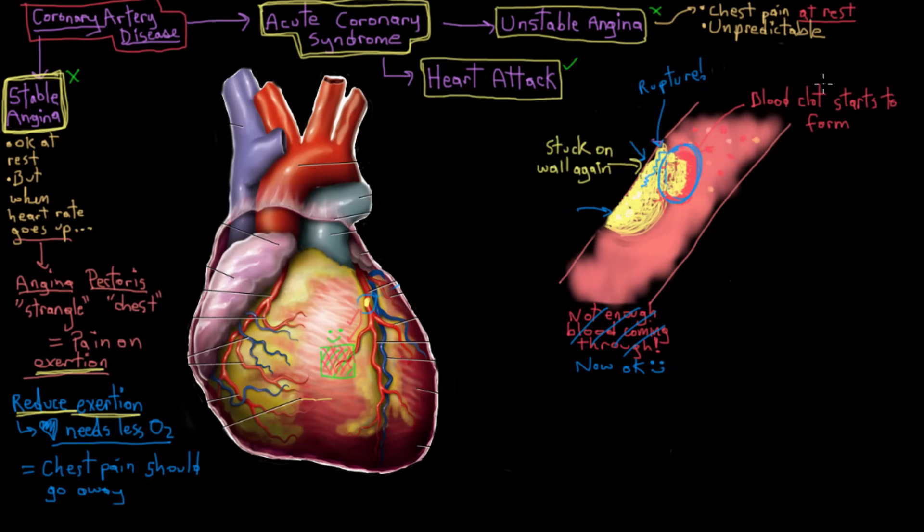Either the clot—also called a thrombus by the way, a clot is also called a thrombus—can get so big that it completely blocks off that blood vessel, and that's also called thrombosis, to completely block off a blood vessel by a clot. It's called thrombosis.